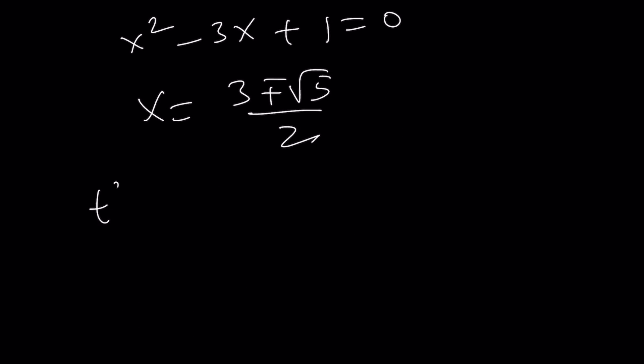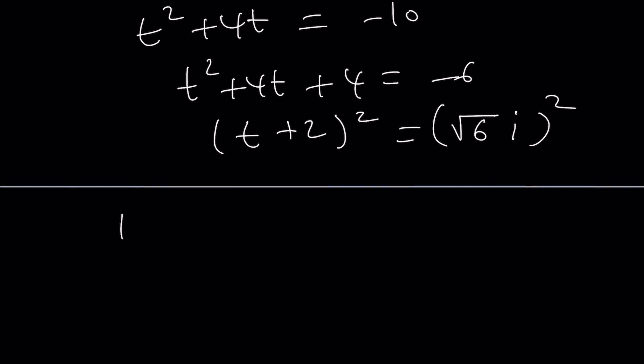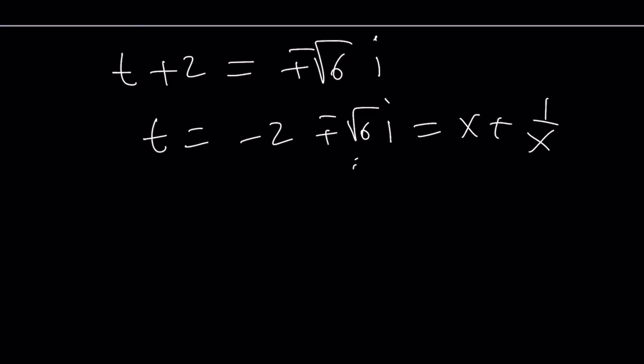t squared plus 4t plus 10. I'm going to subtract 10 and add 4. You're going to see why in a little bit. I'm completing the square. That's going to give me t plus 2 squared equals square root of 6i squared, which is negative 6, by the way. And from here, by square rooting, we get t plus 2 equals plus minus square root of 6i. And t becomes negative 2 plus minus the square root of 6i. Set it equal to x plus 1 over x. Solve that equation and you'll get the complex solutions. But you can do that, right? Easy piece of cake.